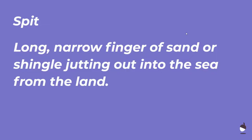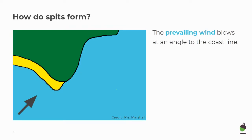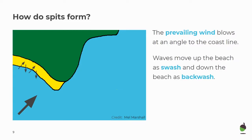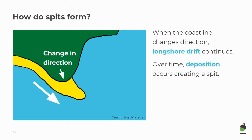A spit — can you get this definition jotted down for me? It is a long narrow finger of sand or shingle jutting out into the sea from the land. How do spits form? The prevailing wind blows at an angle to the coastline. Waves move up the beach as swash and down the beach as backwash. This transports material along the coast as longshore drift. When the coastline changes direction, longshore drift continues. Over time, deposition occurs creating a spit.